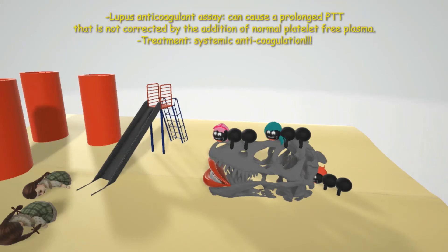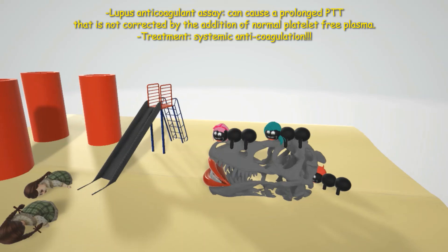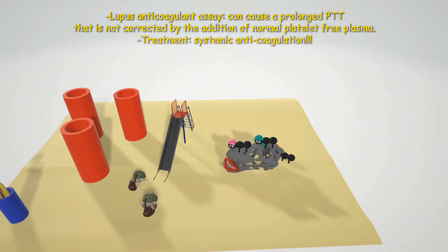For diagnosis, the lupus anticoagulant assay is performed, showing a prolonged PTT time that is not corrected by the addition of normal platelet-free plasma. Treatment for antiphospholipid syndrome involves systemic anticoagulation.